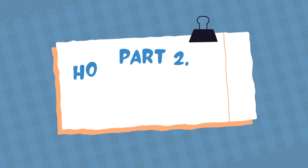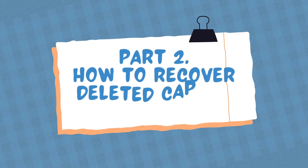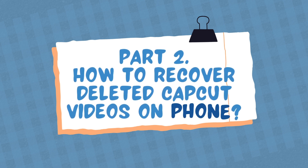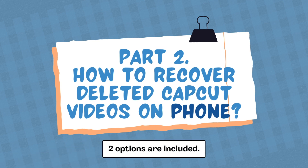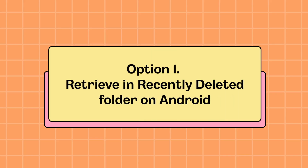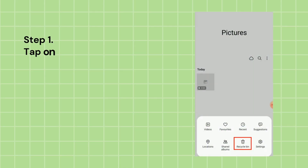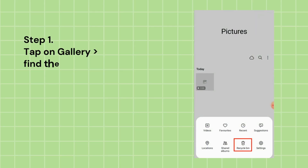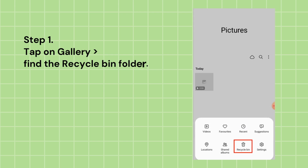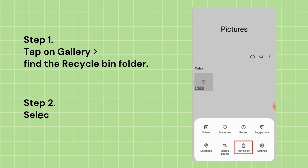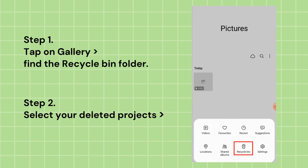Part 2: How to recover deleted CapCut videos on phone. Two options are included. Option 1: Retrieve from the recently deleted folder on Android. This applies to videos deleted from CapCut less than 30 days ago. Step 1: Tap on Gallery and find the recycle bin folder. Step 2: Select your deleted projects and tap Restore.